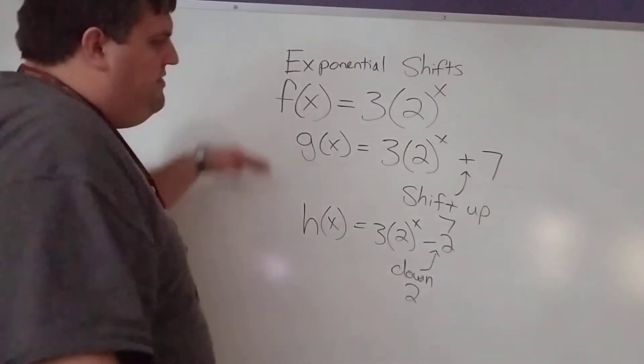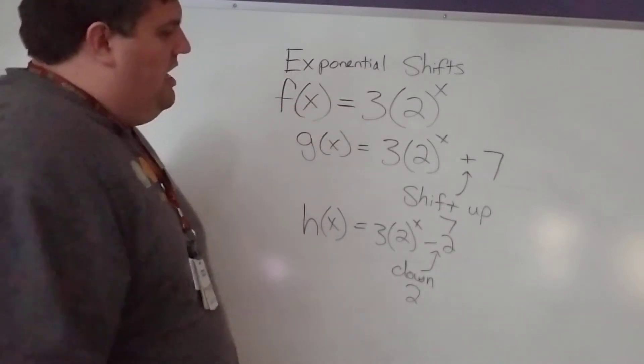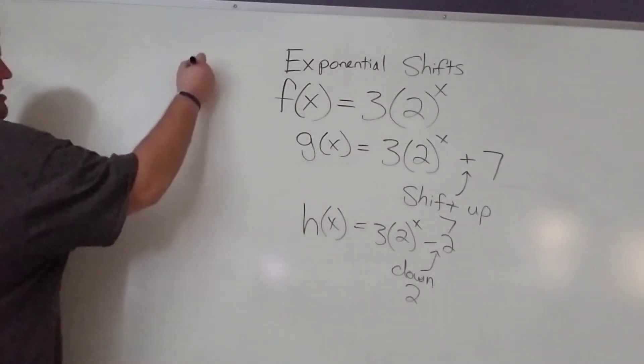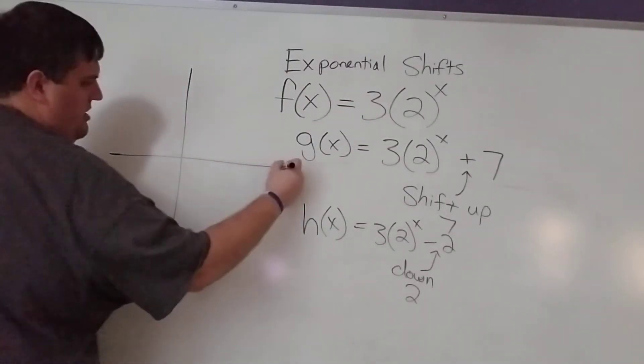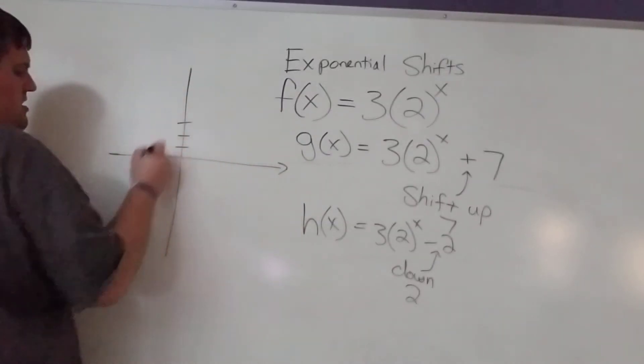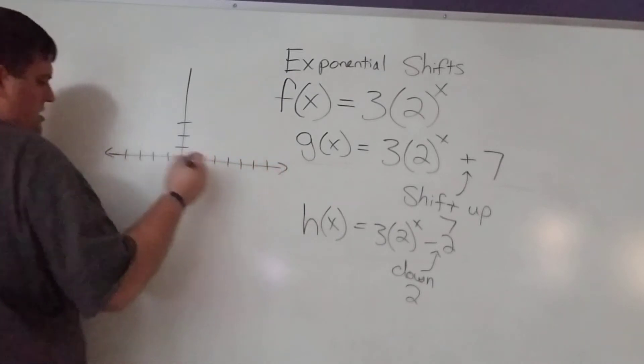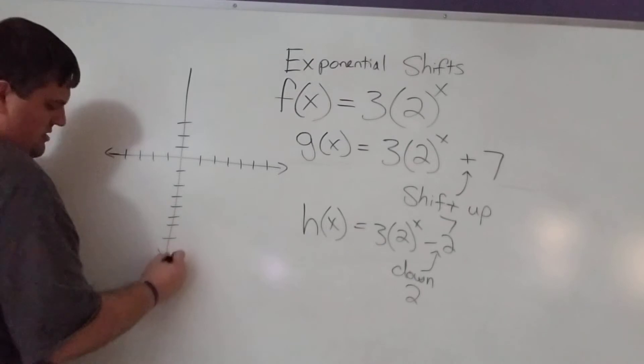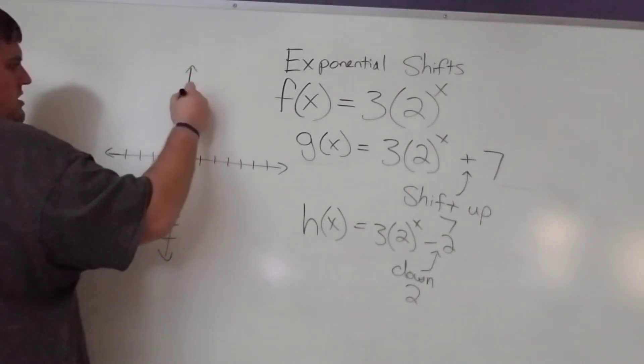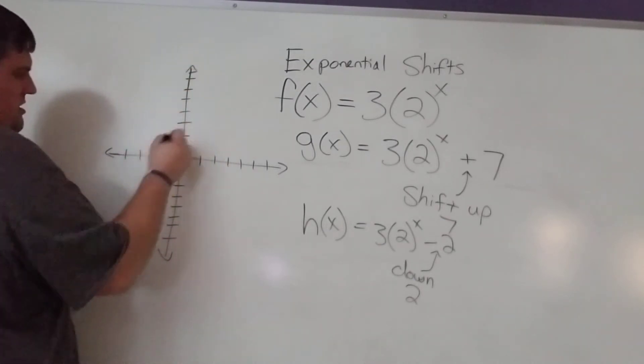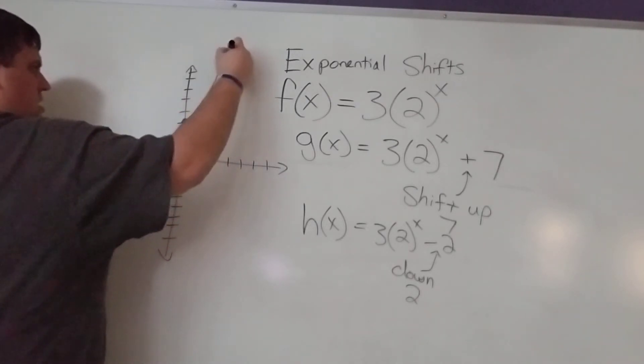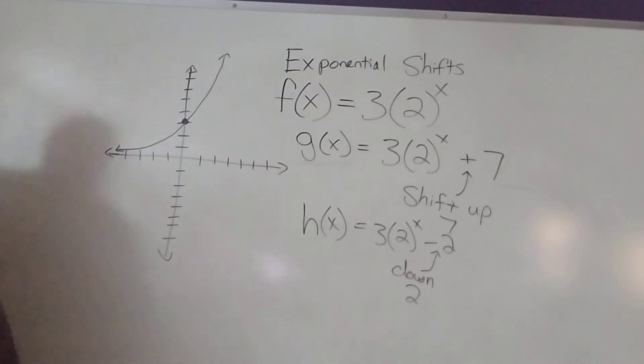When we see the number on the outside, at the end of our number, that's going to be a vertical shift. It's either going to go up if it's plus, or it's going to go down if it's minus here, just like it was before. So, I can graph the original. The original looks like it goes through 3. That would be f of x.